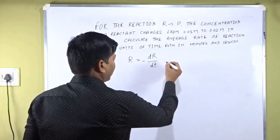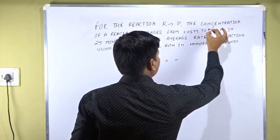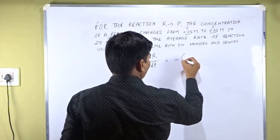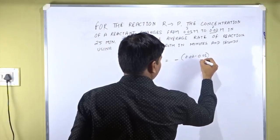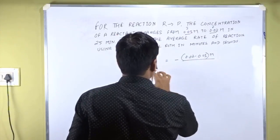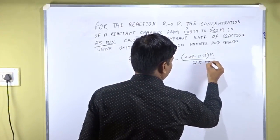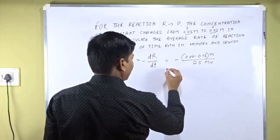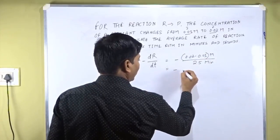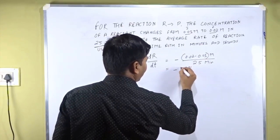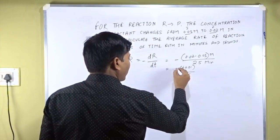Now we apply this formula and plug in the values. Minus ΔR gives us the final concentration minus the initial concentration. So that is 0.02M minus 0.03M in the numerator, divided by ΔT which is 25 minutes. Subtracting these values, 0.02 minus 0.03 equals minus 0.01, and the two minus signs cancel out.